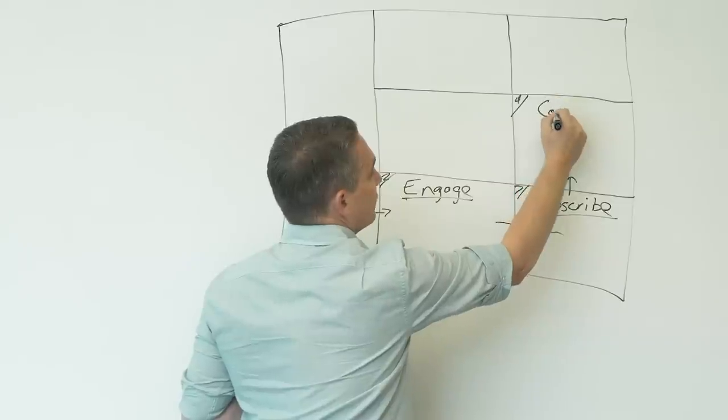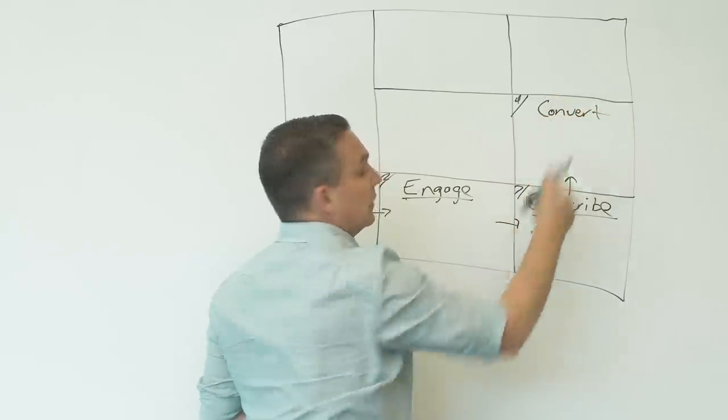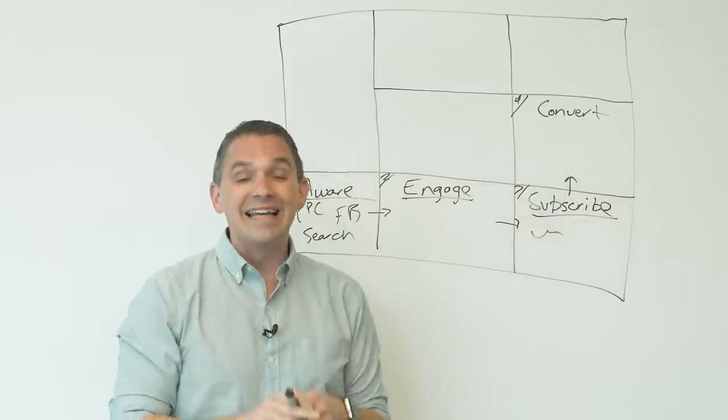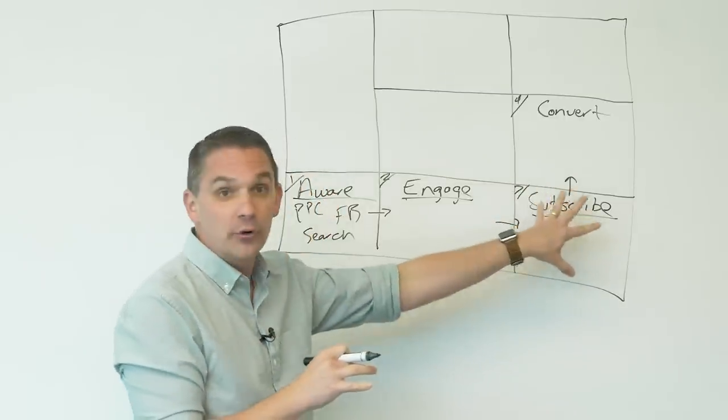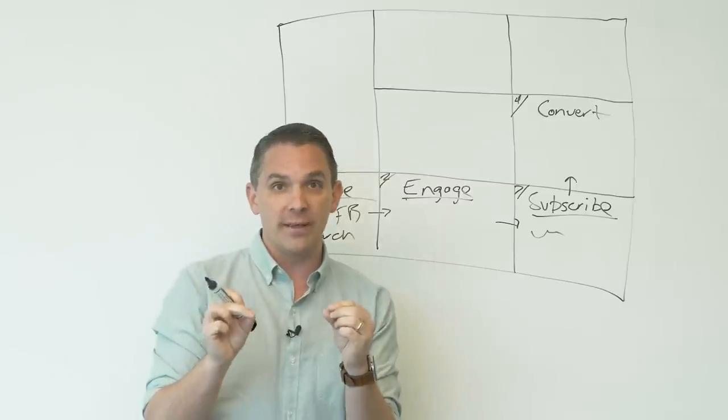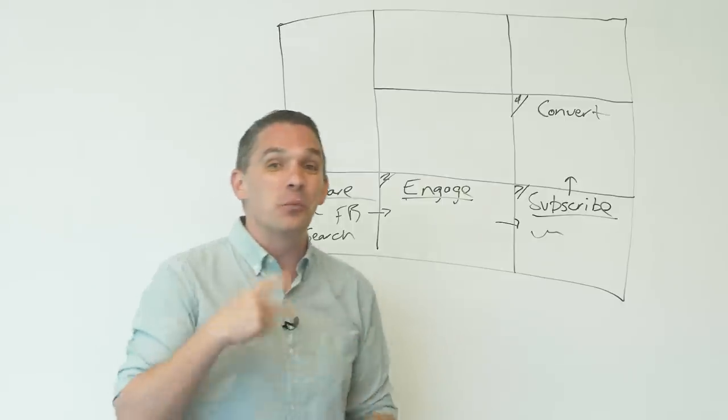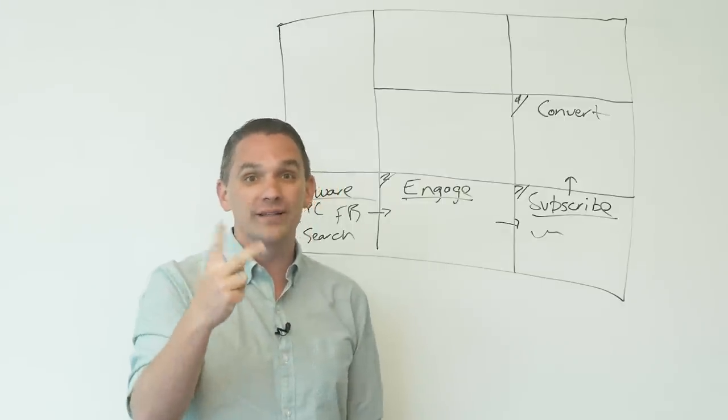So stage four is the convert stage. The convert stage. And the question that we're asking at the convert stage is how do we get these subscribers to make a micro-commitment? A micro-commitment. In general, as human beings, we show commitment in one of two ways.